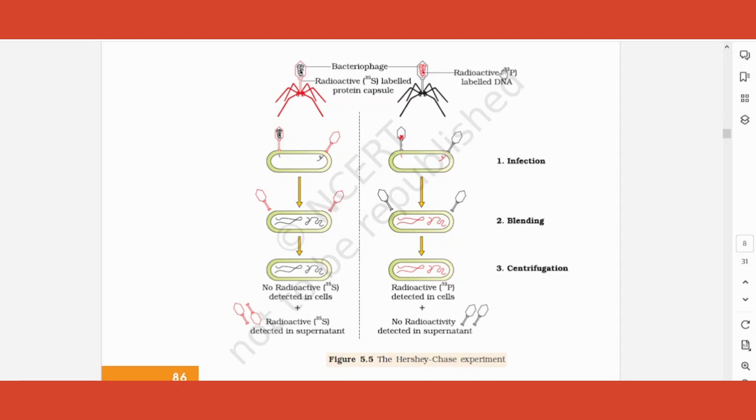If DNA is the genetic material, radioactive phosphorus should be found in the bacteria. If protein is the genetic material, radioactive sulfur should be found in the bacteria. And what did they find? They found out that radioactive phosphorus was detected in the cells, which indicated that DNA is the genetic material.